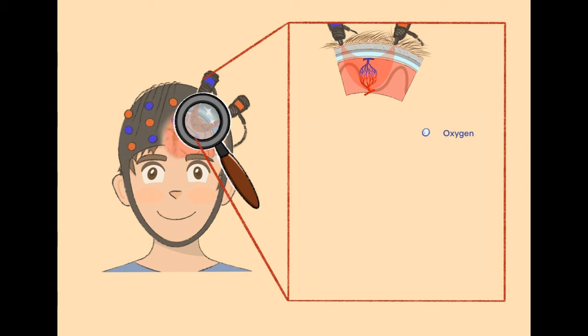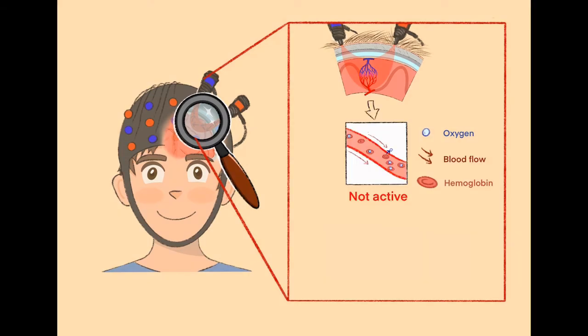Oxygen is carried to brain areas by a protein in your blood that is called hemoglobin. Hemoglobin is what makes your blood red. In order for oxygen to reach the active brain region quickly, blood vessels become wider. The blood flow increases. Lots of fresh blood with oxygenated hemoglobin arrives at the active brain regions.